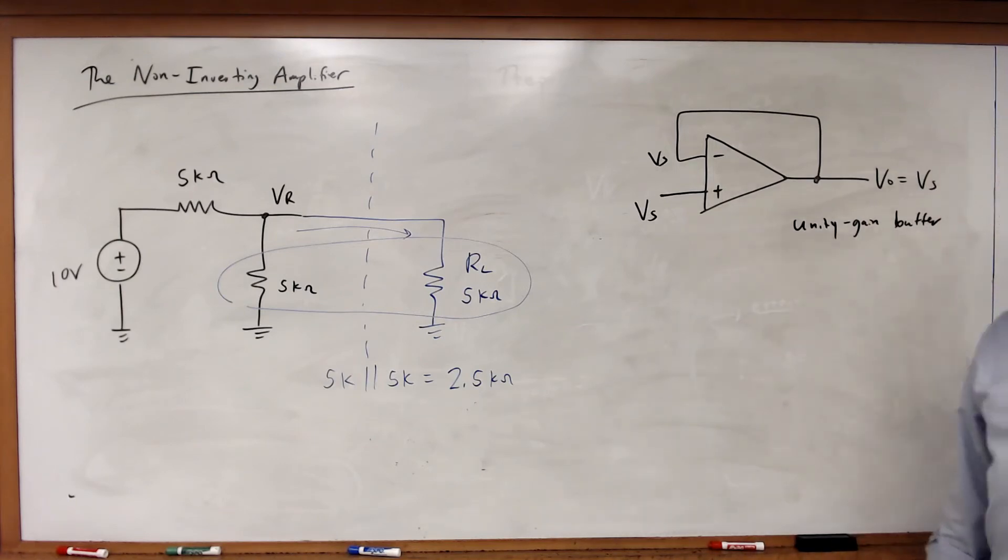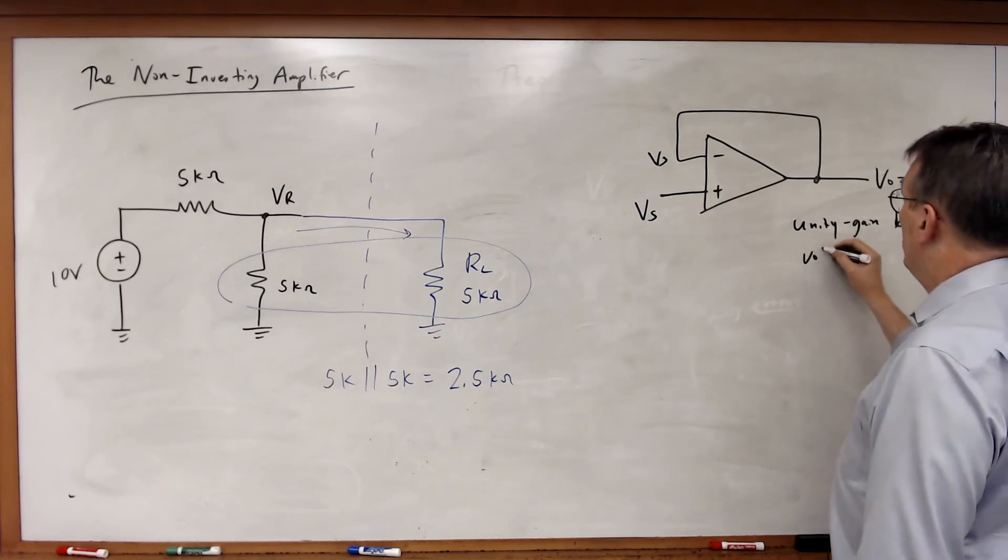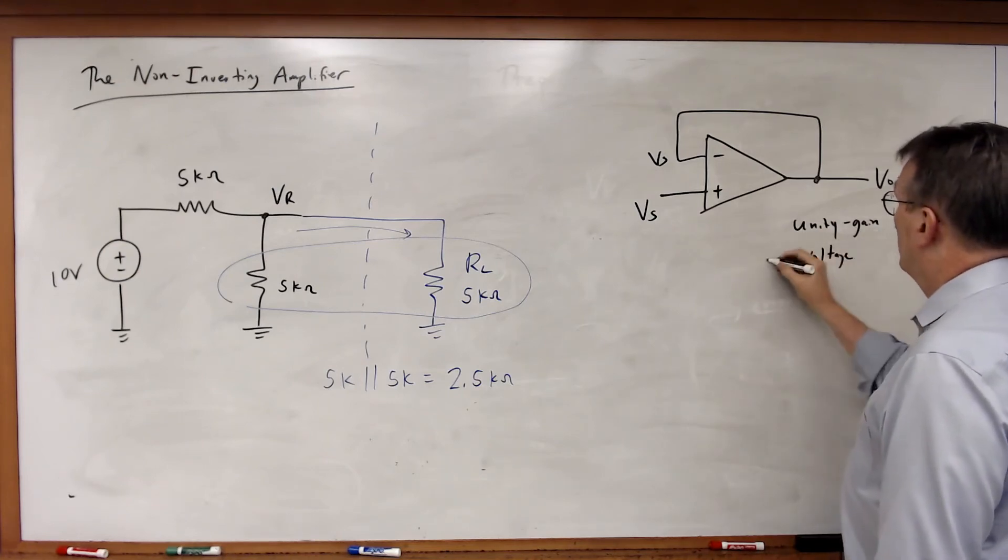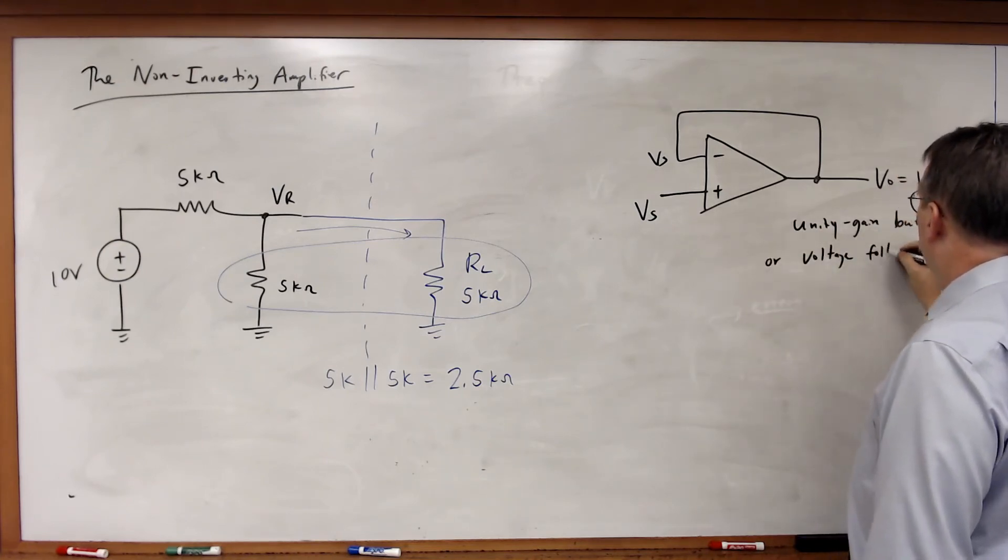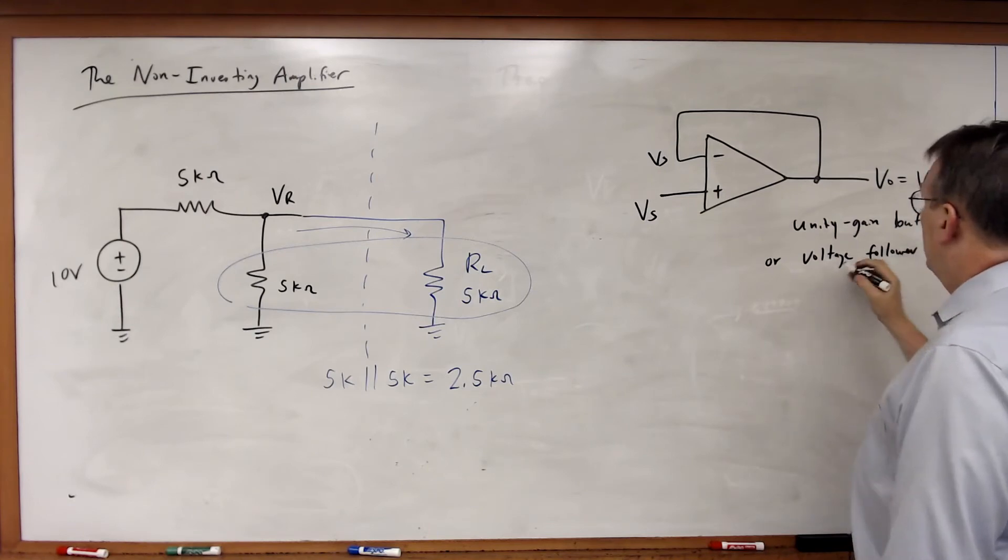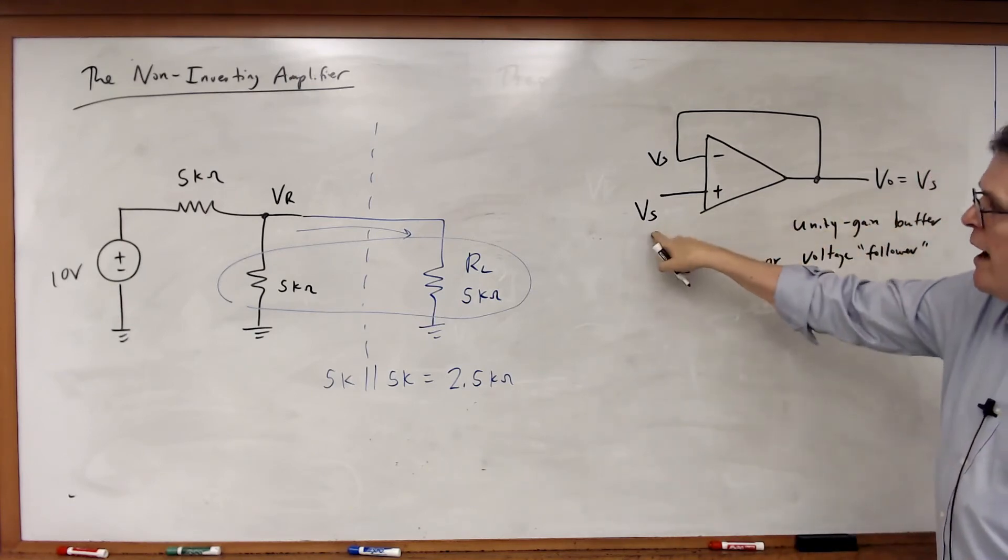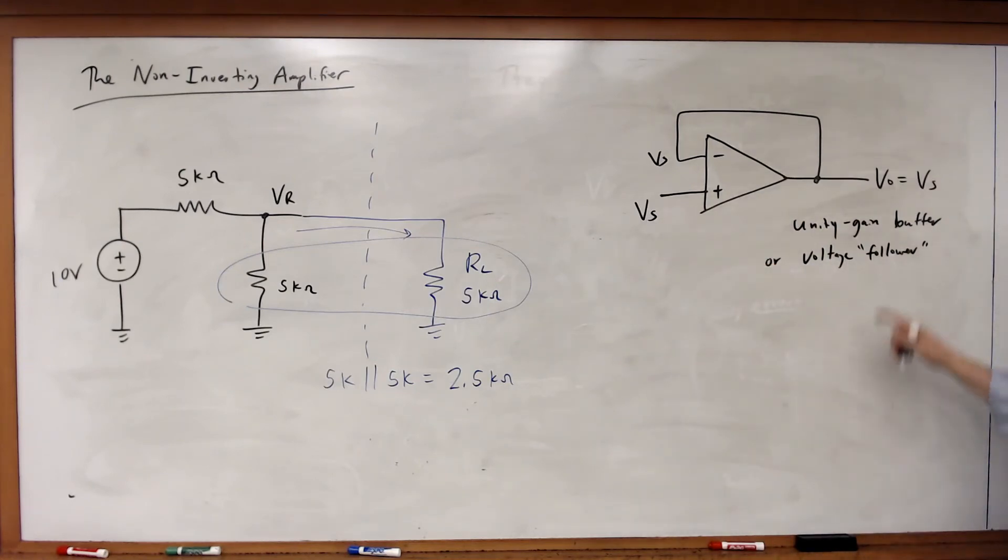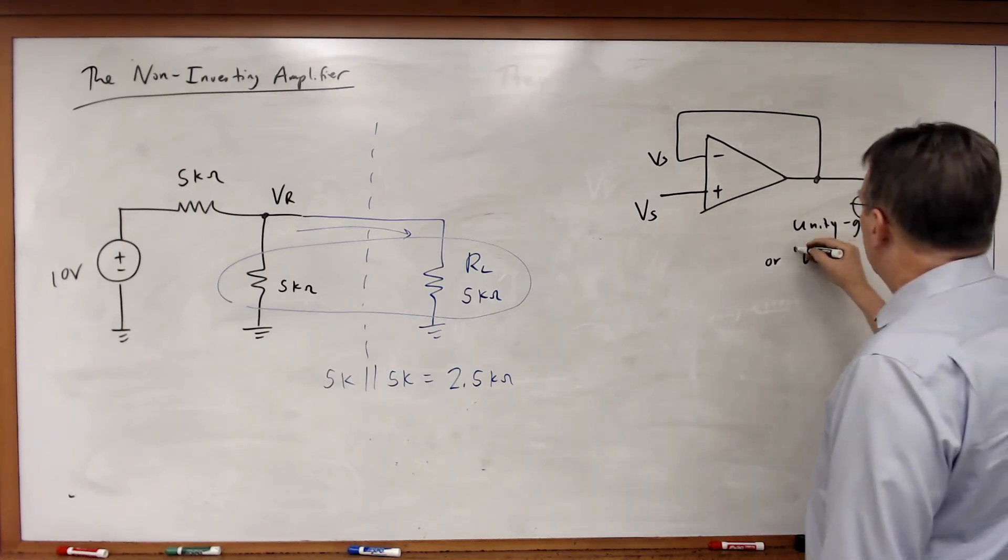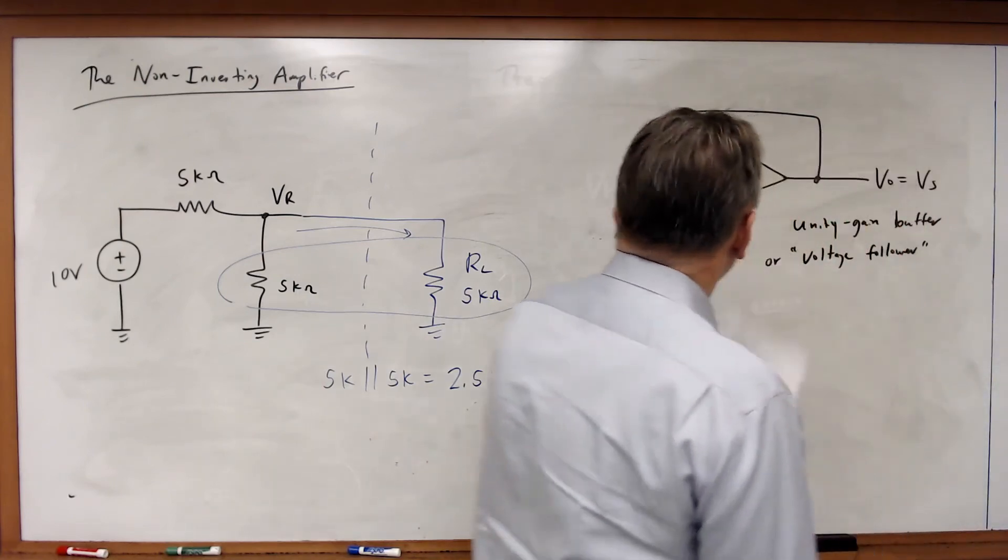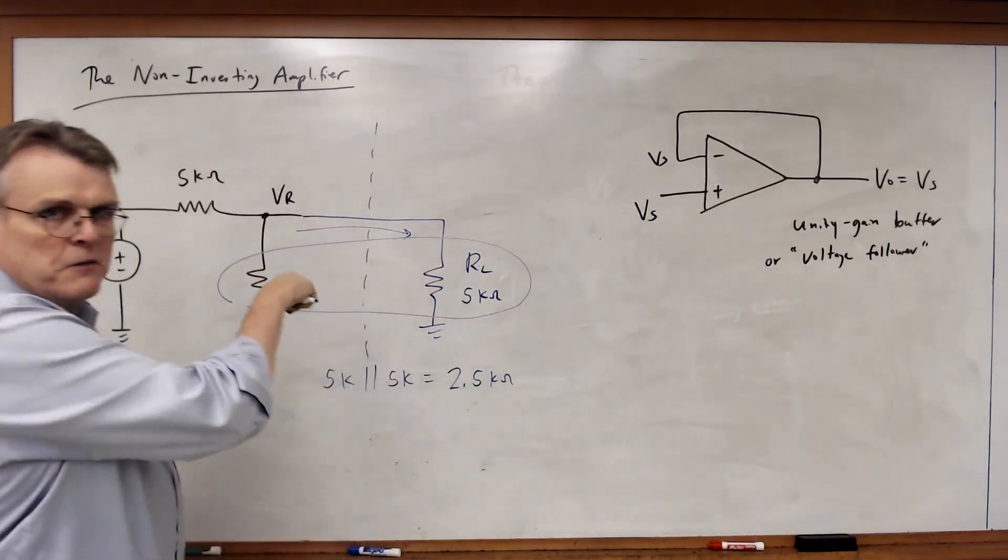We call this circuit a unity gain buffer. Because the gain is equal to 1. It's also sometimes called a voltage follower. And the idea behind that is the output voltage follows or copies the input voltage. So voltage follower or unity gain buffer.